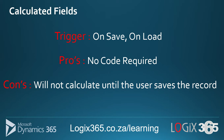The pros of calculated fields: they're very simple to implement and can handle simple as well as complicated math — whole numbers, decimal numbers, currency, and nested calculations with BODMAS rules. The cons are that the calculation will not execute until the record is actually saved. So depending on your requirement, you may want to consider different methods. I'm going to show you calculated fields, rollup fields, and business rules.